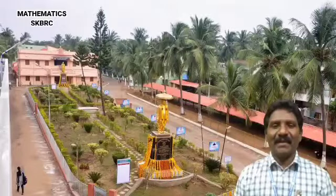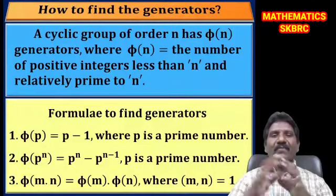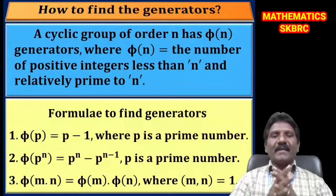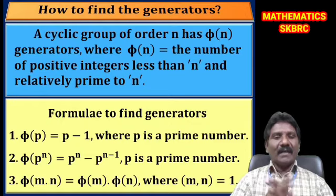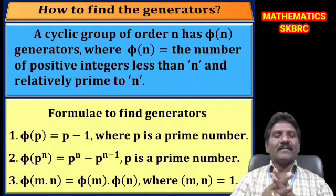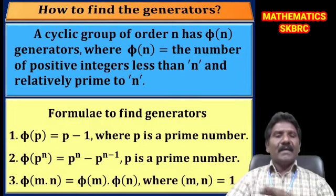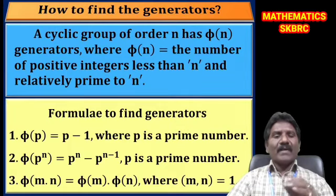Welcome to this PPT presentation on cyclic groups: how to find generators in a cyclic group. Let G be a cyclic group of order n. A cyclic group of order n has φ(n) generators, where φ(n) is the number of positive integers less than n and relatively prime to n.